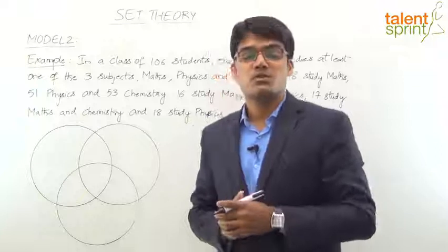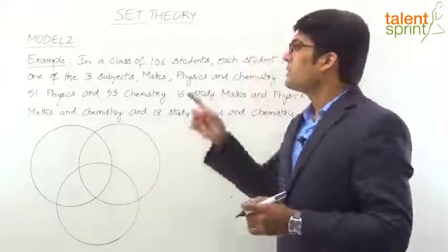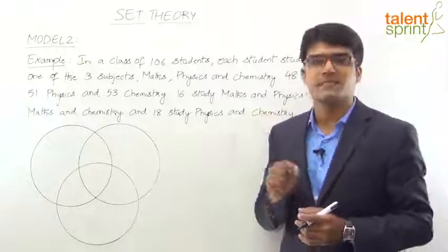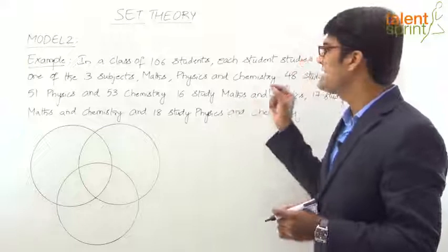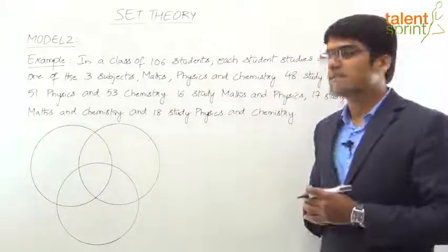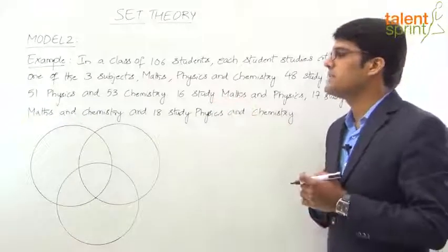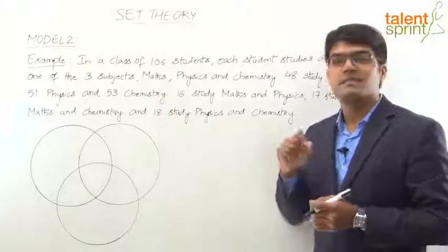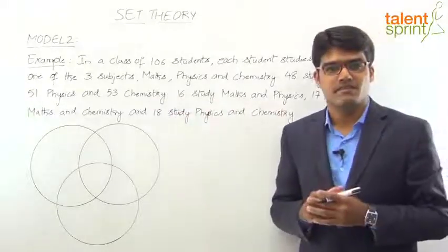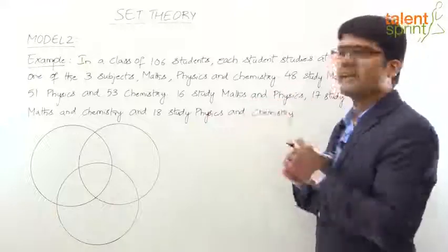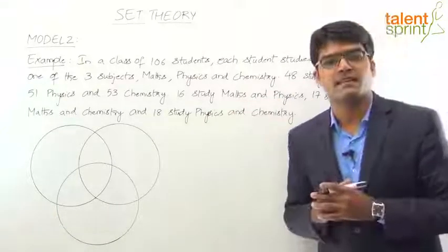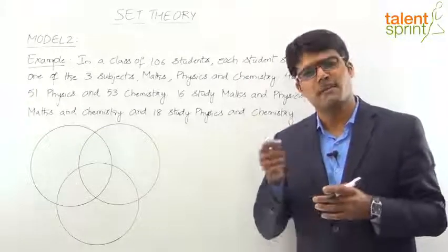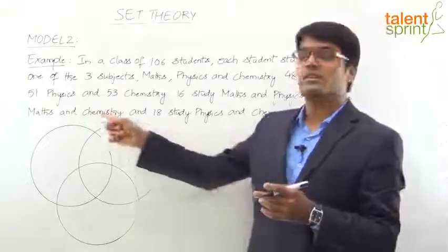Let's discuss Model 2 with the same example. The question is: in a class of 106 students, each student studies at least one of the three subjects — Maths, Physics and Chemistry. 48 study Maths, 51 Physics and 53 Chemistry. 16 study Maths and Physics, 17 study Maths and Chemistry, and 18 study Physics and Chemistry. Based on this data we have 5 questions worth 5 marks based on the Venn diagram.